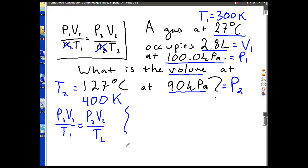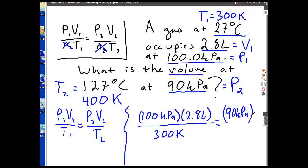Now, all I have to do is just substitute everything. My P1 is 100 kPa times my V1, which is 2.8 liters. Listen up, guys. My T1 is 300 Kelvin. And that is equal to my P2, 90 kPa times my variable V2, that's what I want to solve, over my T2, which we just talked about, 400 Kelvin.